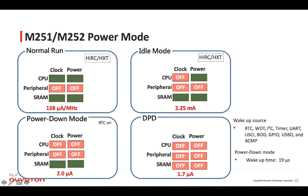This picture shows the power modes provided by the M.251 series. In normal mode and idle mode, the CPU clock is turned off and power consumption is about 2.25 mA. In power down mode, RAM retention is kept and RTC remains on, with power consumption of about 2 mA. In deep power down mode, all peripherals and the CPU clock are turned off, with the lowest power consumption of about 1.7 mA.